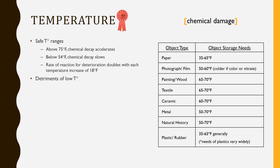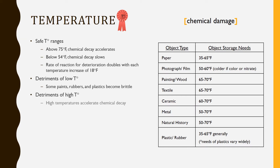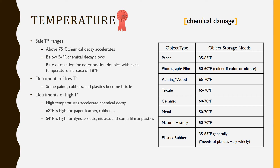Even though decay slows at 54 degrees, there is a reason why these safe temperature ranges have lower limits. Not everything can stand being that cold. Modern paints and some rubbers and plastics can become brittle and crack. We know that high temperatures mean accelerated decay, but high has a different meaning depending on the object type. 68 degrees is high for paper, leather, and rubber, while 54 degrees is high for dyes, acetate, nitrate, some film types, and other plastics.